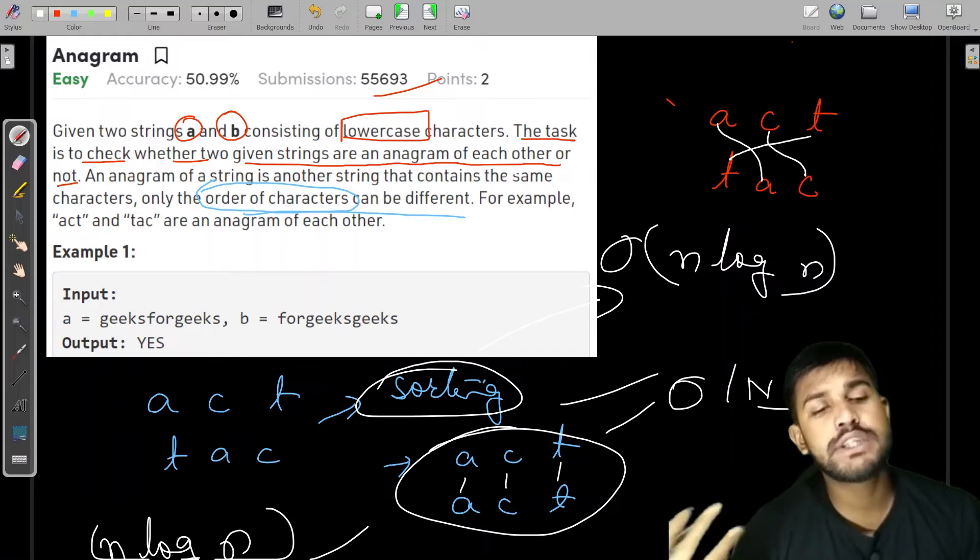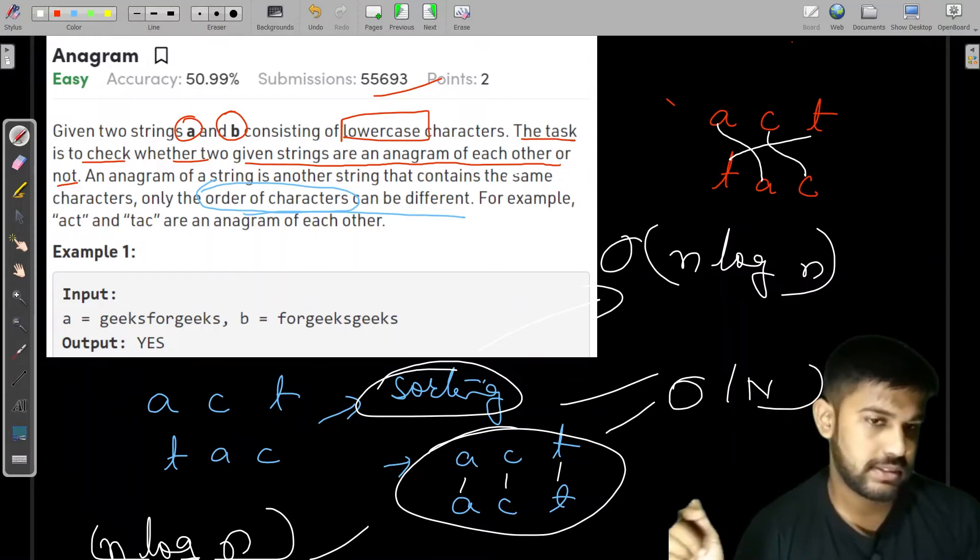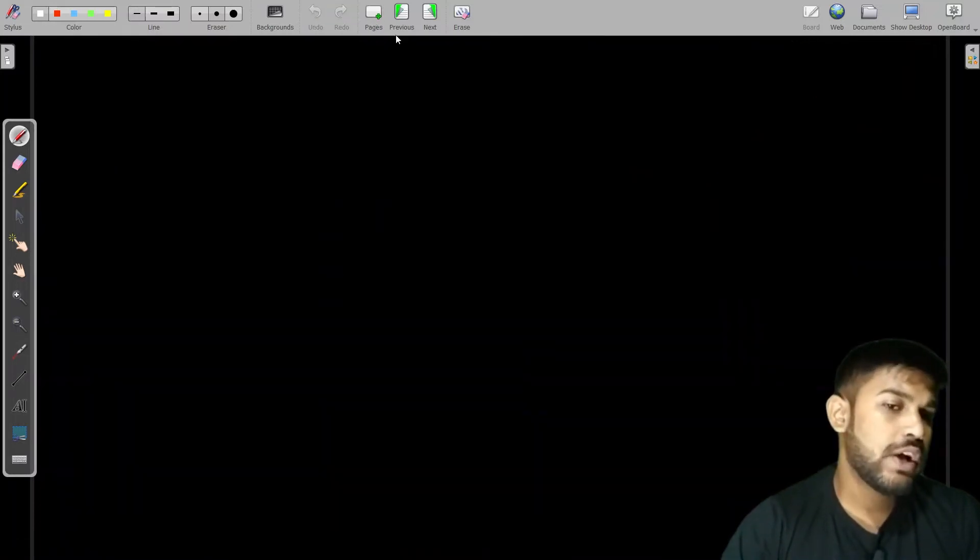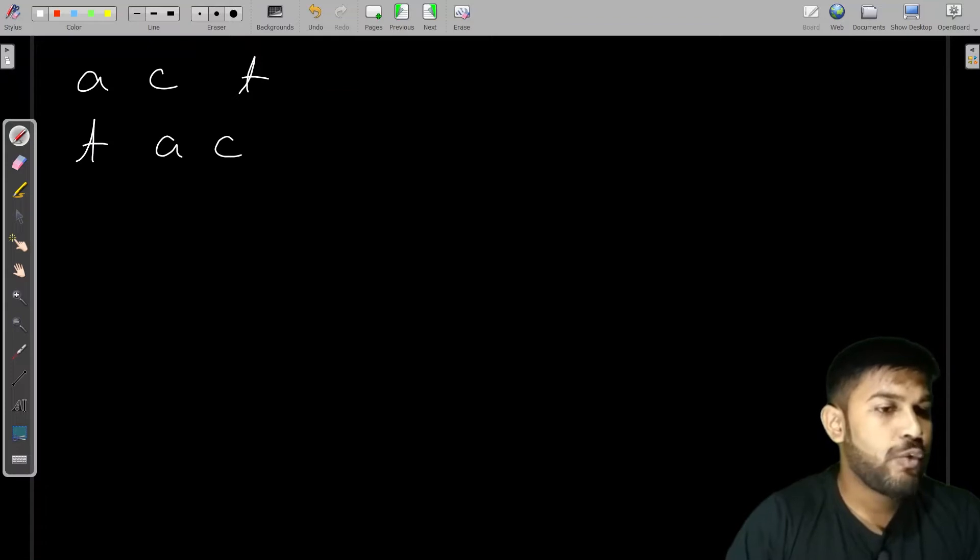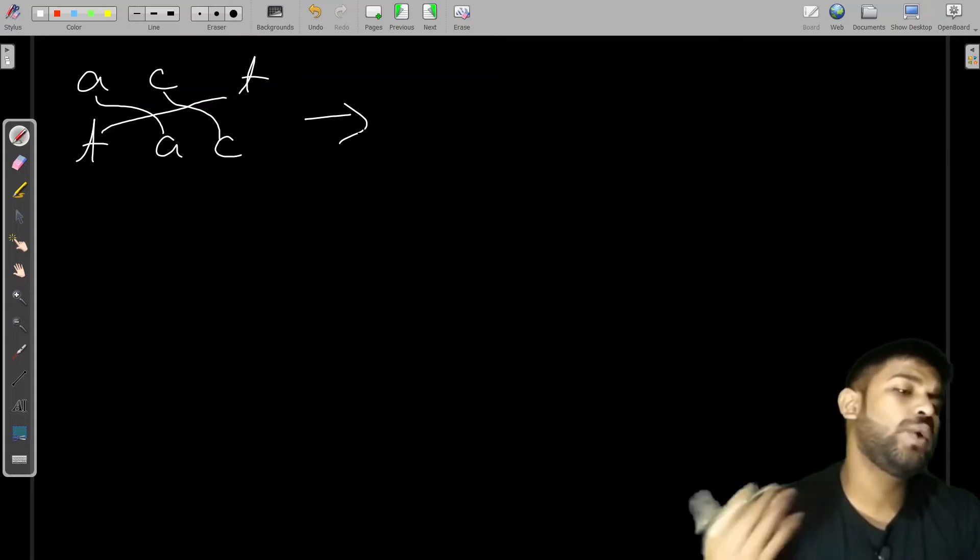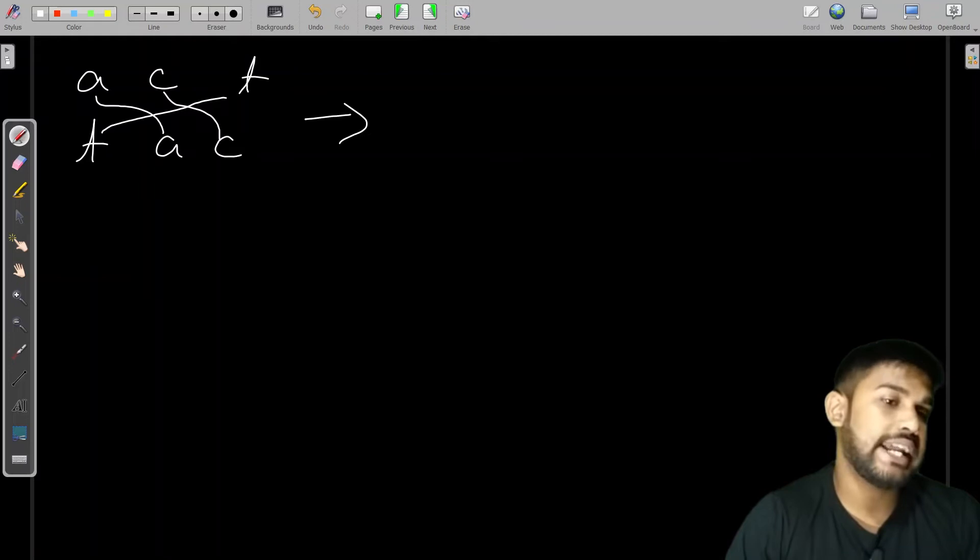Now the interviewer tells you to optimize more upon this. What we can do is with act and tack, we were just mapping A to A, C to C, T to T. We can do the same thing manually by storing the frequency of each character. We can store the frequency of A, C, and T.